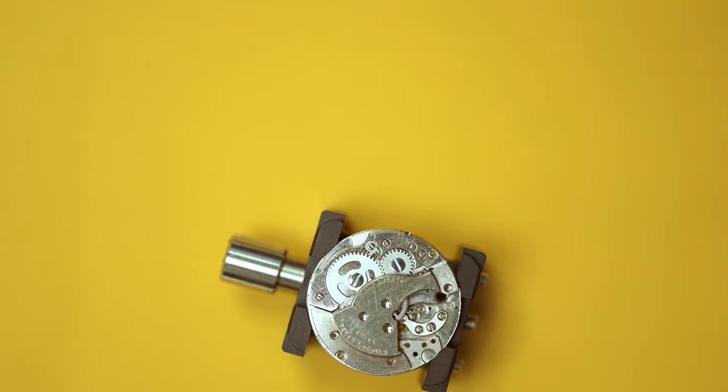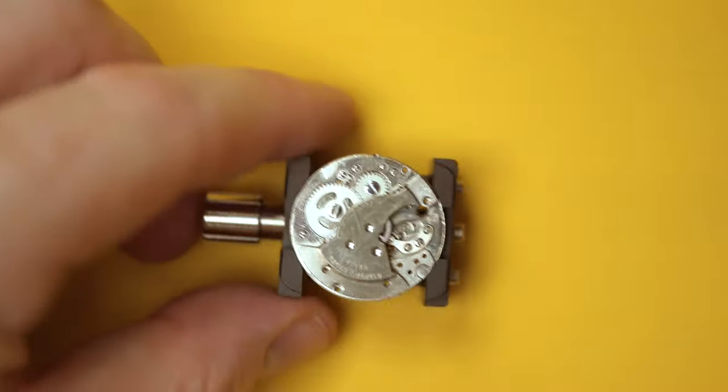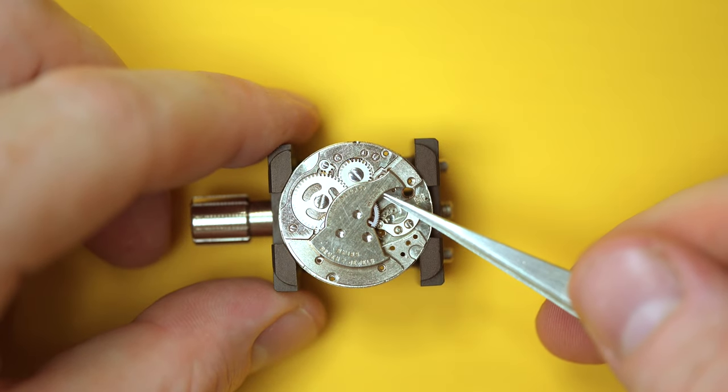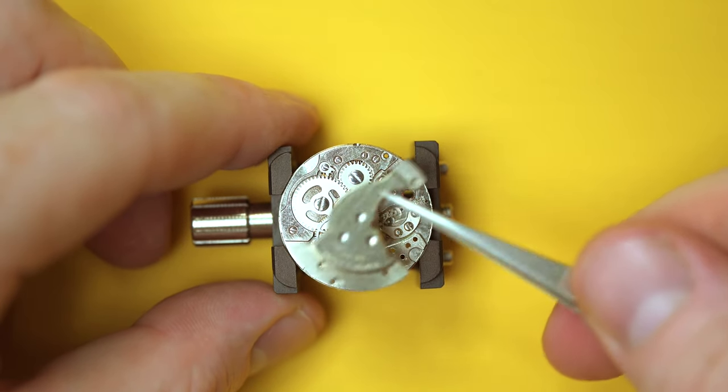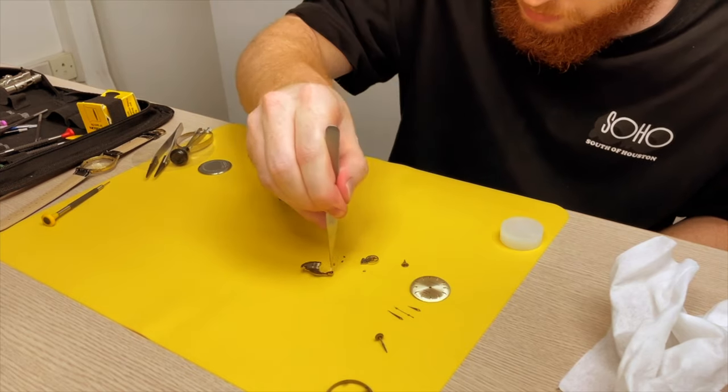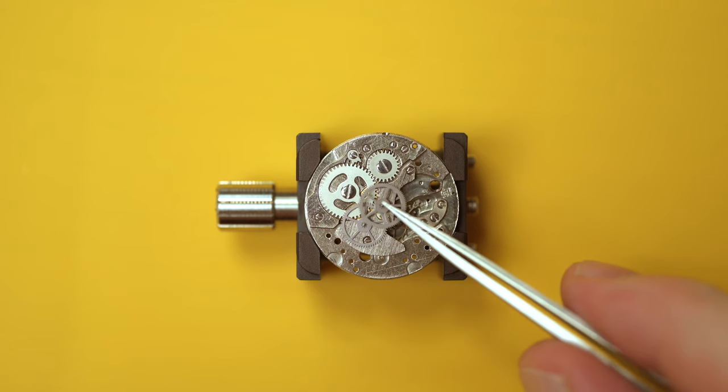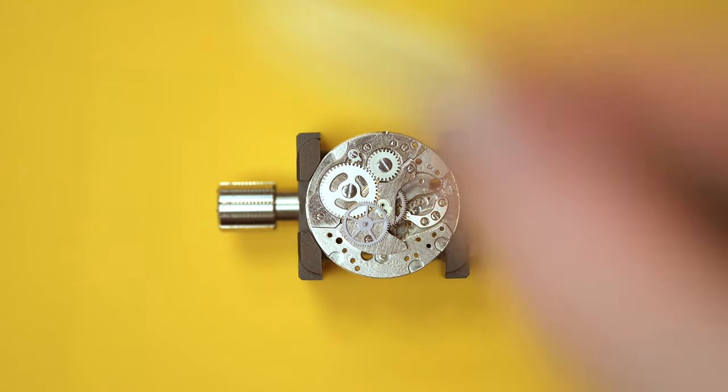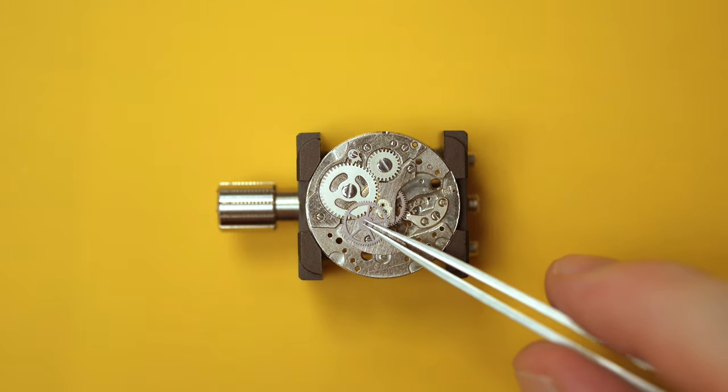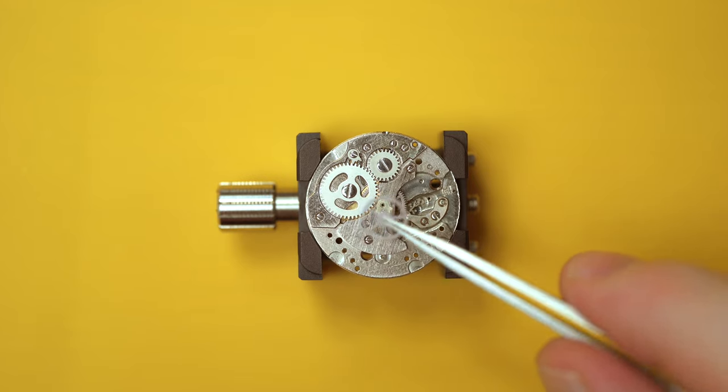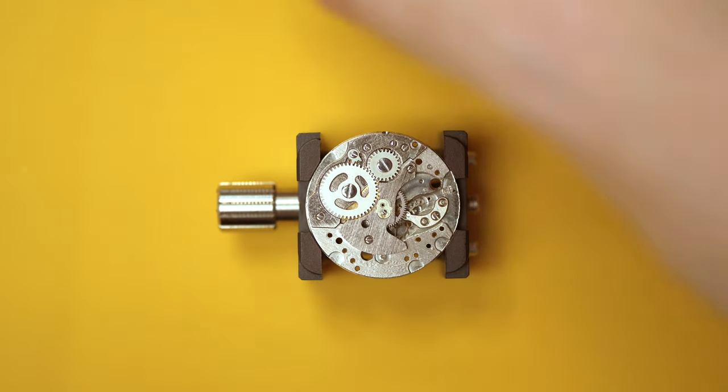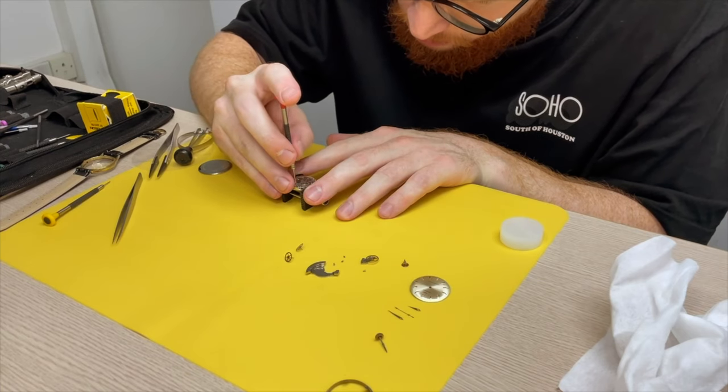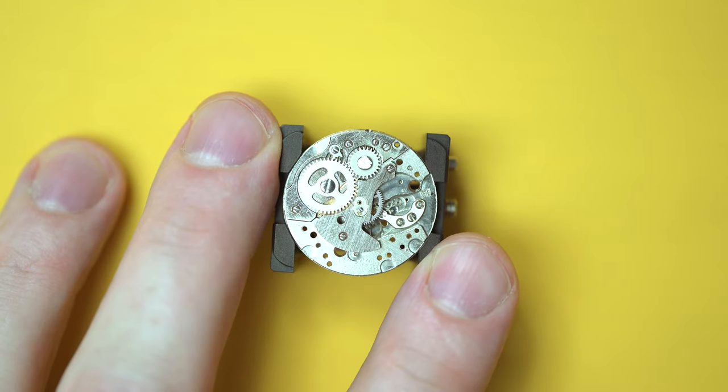So we've removed the three screws for this gear train bridge. This large piece of metal, the piece that said Waltham Watch Co. on it. And that bridge just acts to hold all of these cogs. All these cogs have tiny pivots that need to be held in position. And that bridge normally would be jewelled, and normally you would see some purple or red jewels to hold the pivots in place, but that one just had some drilled holes. So it's just metal on metal.